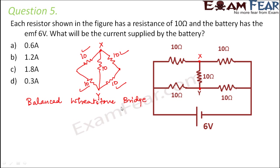This is not only a Wheatstone bridge but a balanced Wheatstone bridge. In a balanced Wheatstone bridge, there is no current which flows through the middle arm — there is no deflection in the galvanometer present here, which shows there will be no current flow across XY. So no current flows through XY, which means we can very easily neglect this 10 ohm resistance. This 10 ohm resistance is not taking part in the current flow, so it is basically not participating in this circuit.